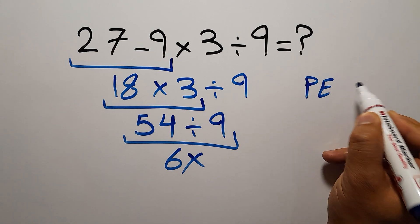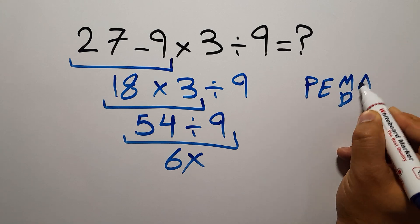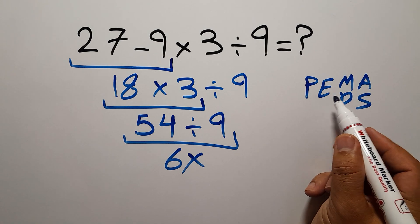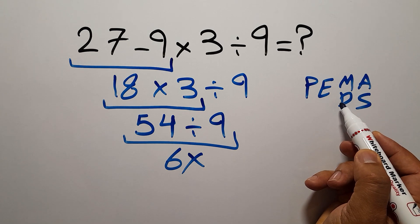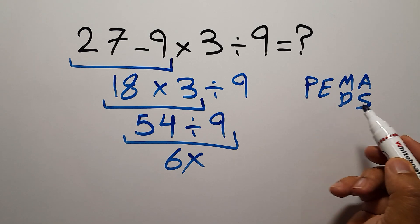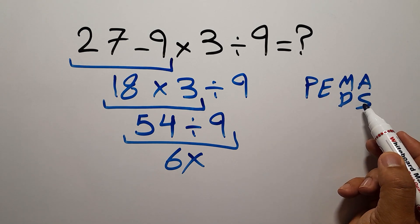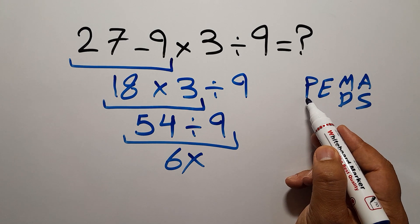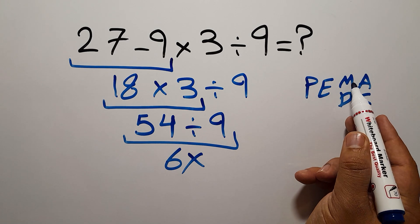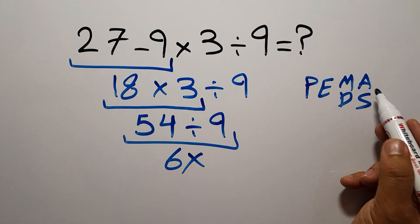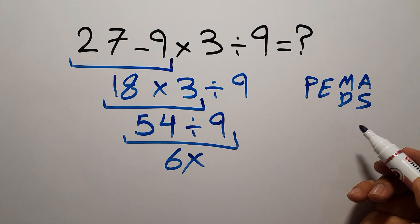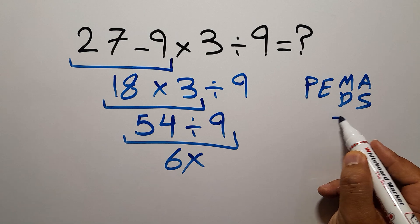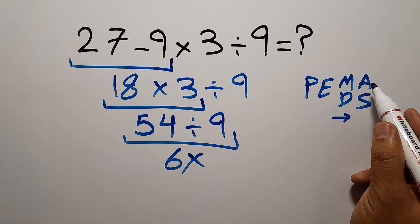PEMDAS: P stands for parentheses, E stands for exponents, M and D stand for multiplication and division, and A and S stand for addition and subtraction. First we do parentheses, then exponents, then multiplication or division, and finally addition or subtraction.